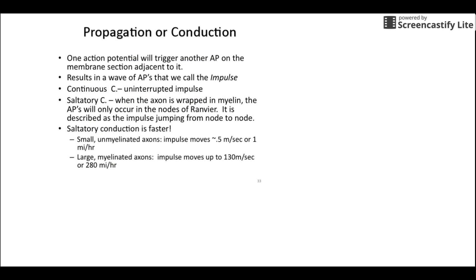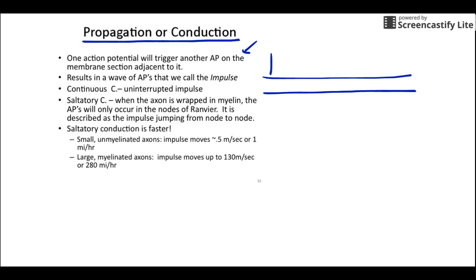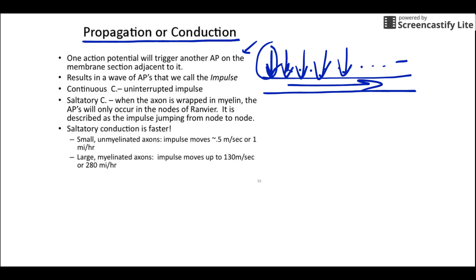Every year students ask: why do we care about action potentials at all? All they do is sodium rushes in, potassium rushes out, and then it resets. Well, it's this idea — propagation or conduction — that's really important. One action potential will actually trigger another action potential. So let's say this is one axon and we get an action potential right here — sodium rushed in, potassium rushed out, sodium-potassium pump reset us. Conduction tells us that's going to cause another action potential right next to it, which causes another, and another, and another. This is what actually moves through your body. When you stub your toe, you start with one action potential right there in the pain receptor, and this wave goes all the way up to your brain — that's how you feel it. Or if you want to move your finger, it starts with one action potential and causes a chain reaction that moves through your body.